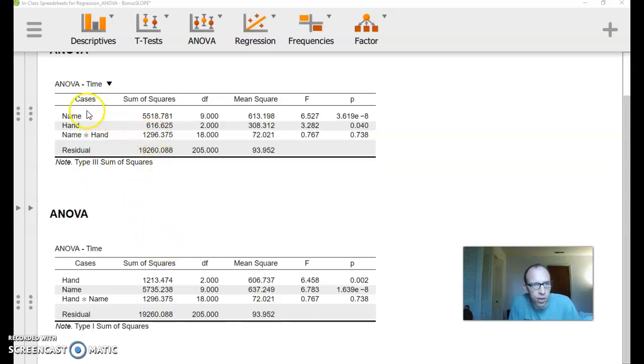If you remember, we had run a couple ANOVAs. I think one had an interaction, one didn't. But regardless, the sum of squares here for hand was not the same. And according to what we've been learning, it should be the same.